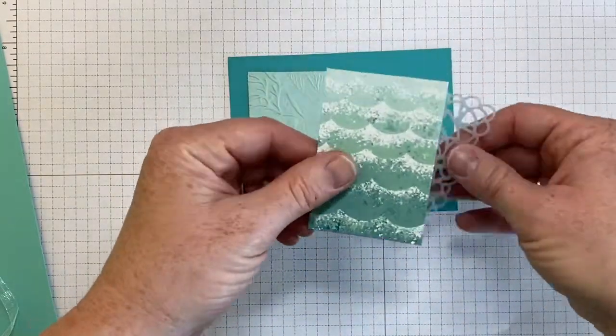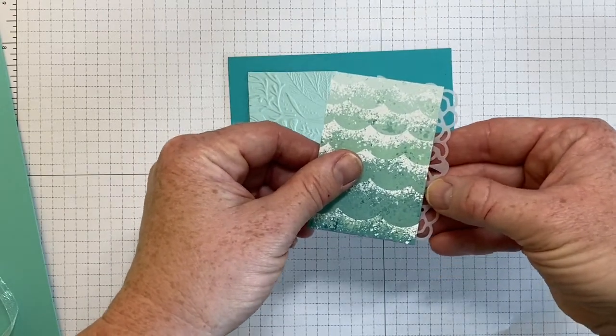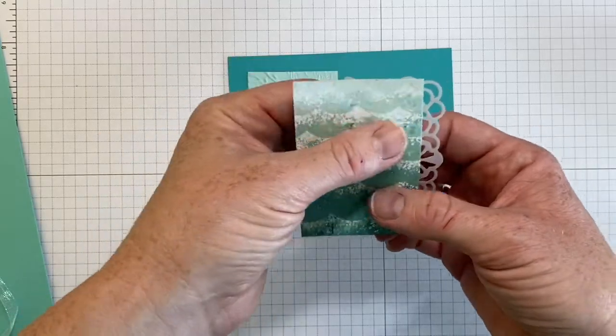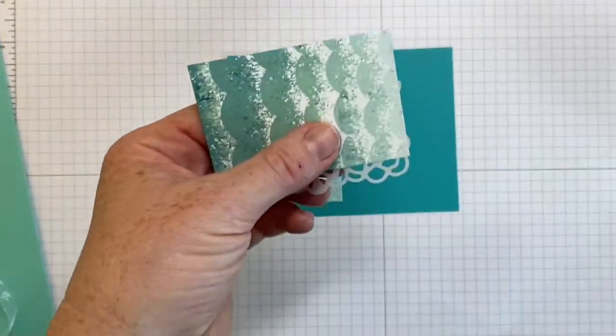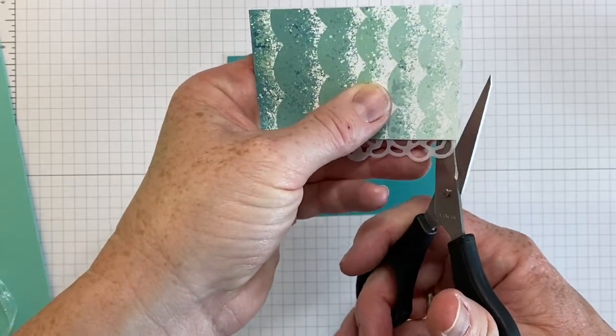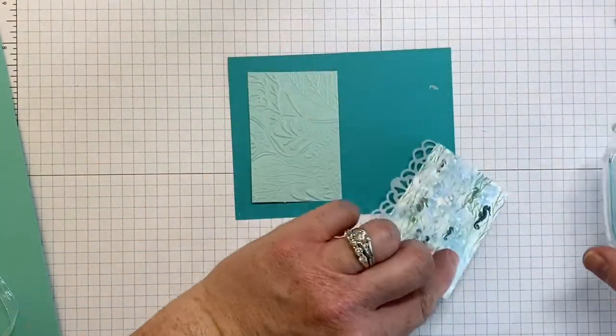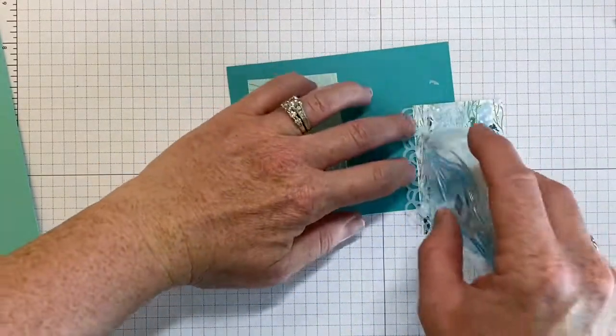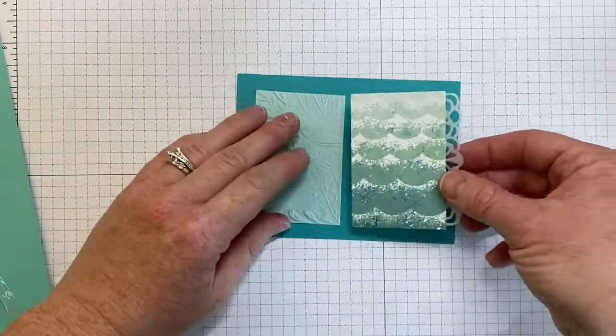So because this is a 3 inch piece of designer series paper, you can just go ahead and line that right up. And I'm just going to use my snips to take off a little bit of the excess here that's kind of looping out the side. Now we'll make sure that we've got enough adhesive.